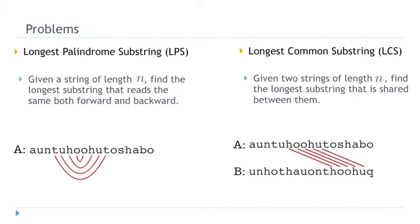LCS stands for longest common substring. There is also a problem called longest common subsequence — the difference is that in a subsequence we allow gaps between characters, whereas in a substring everything has to be contiguous. So here we are considering longest common substring, and the characters must be adjacent. Given two strings of length n, we want to find the largest substring shared between them.